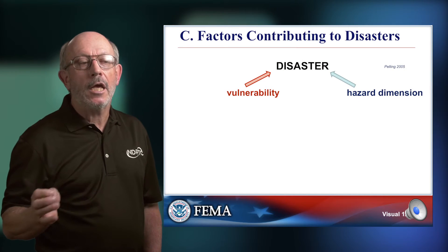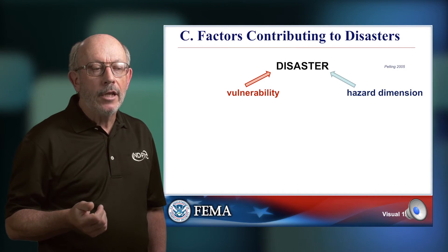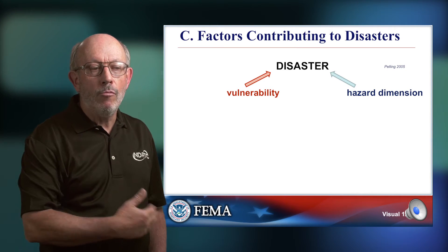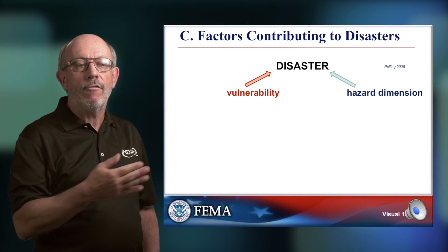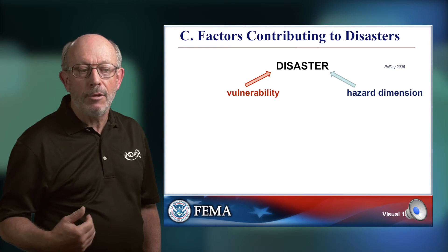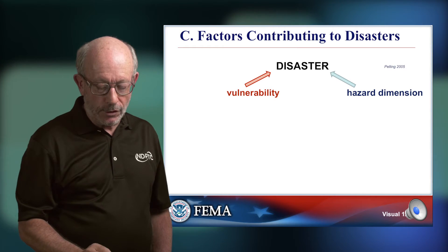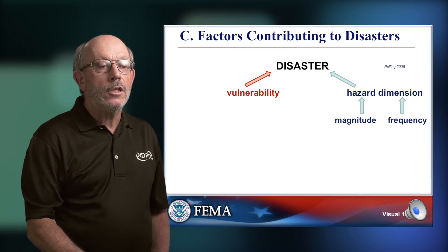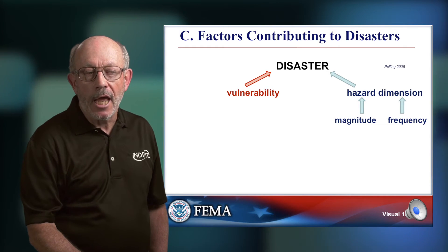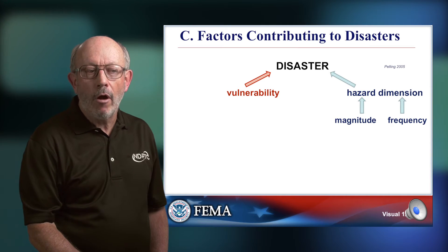The third and final part of this module thinks about what defines a disaster. It's the meeting place of a hazard — a natural process — with the community. We can call the human factors vulnerability, and the hazard factors some dimension, magnitude, or intensity term. The natural forces really have only two dimensions: how big is the event, and how often does it happen? It's fairly easy to deal with, even in terms of writing an equation.